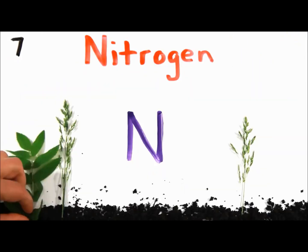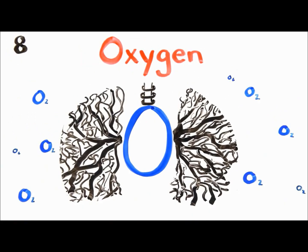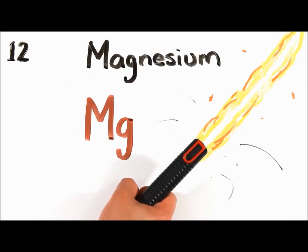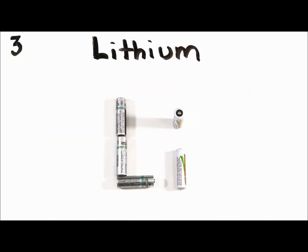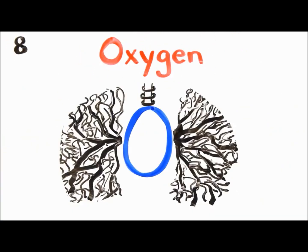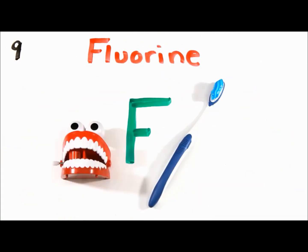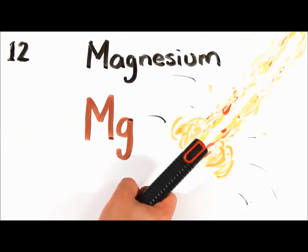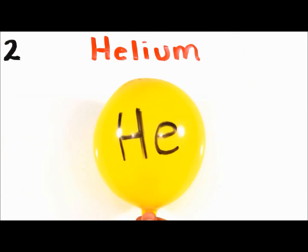These are the first twelve elements of the periodic table.